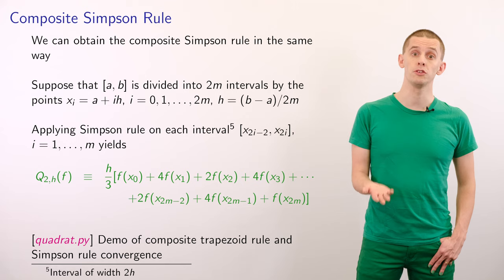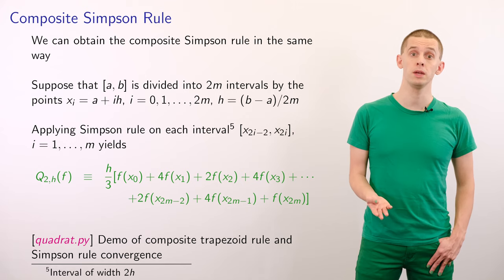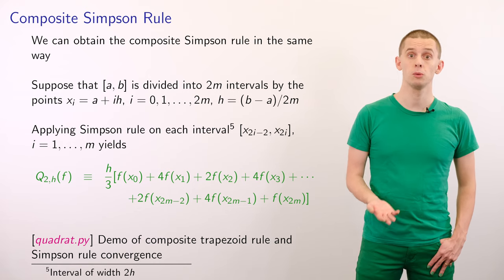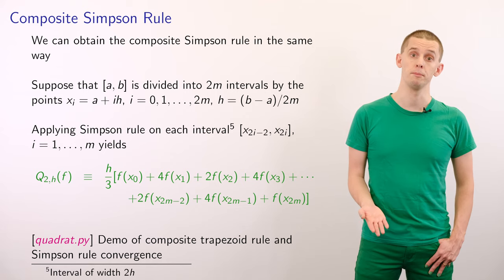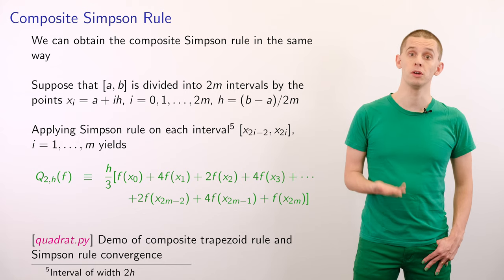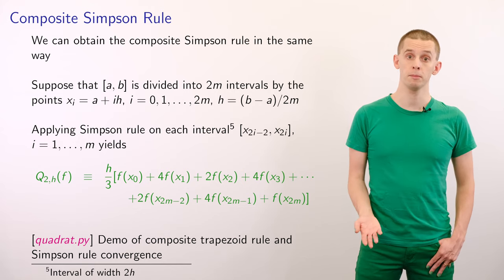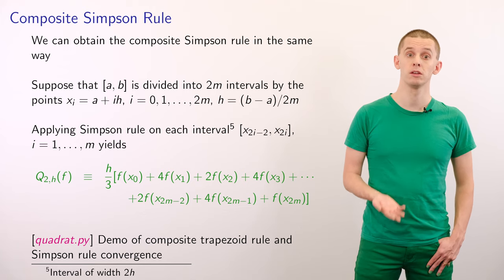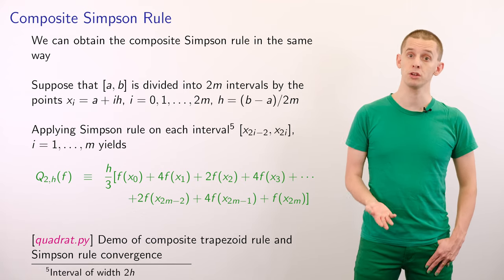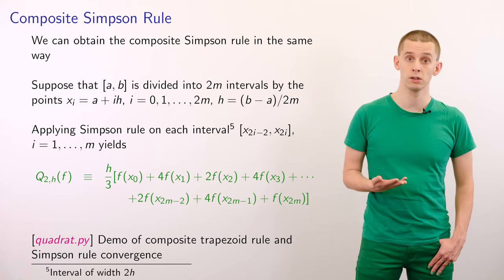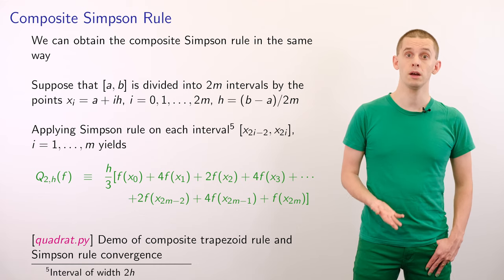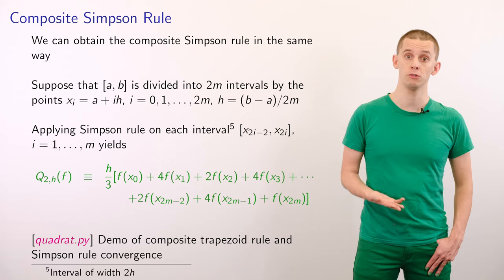We can obtain the composite Simpson rule in the same way. Suppose we divide our interval from a to b into 2m intervals by points x_i defined as a plus i times h, where h equals b minus a divided by 2m. Applying the Simpson rule to each interval x_{2i-2} to x_{2i} for i equal 1 to m gives us the composite Simpson rule Q_{2,h} of f, with a prefactor of h over 3. Samples run from x_0 to x_{2m}: the two endpoints have a weighting of 1, and all interior points have alternating weightings of 2 and 4.